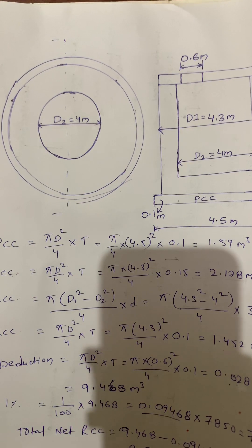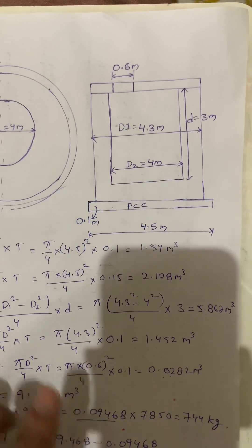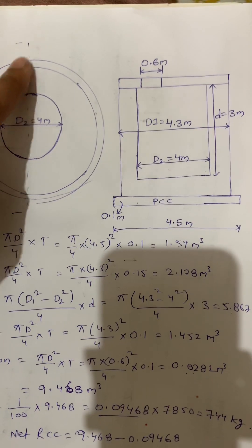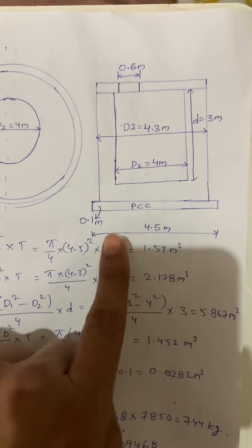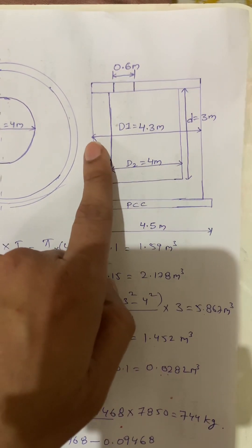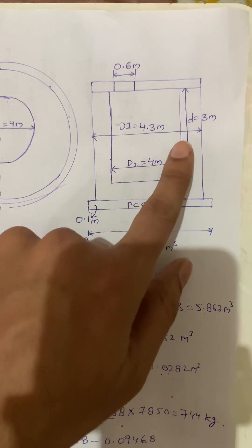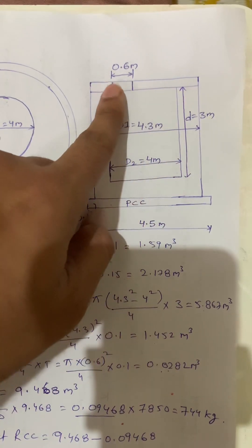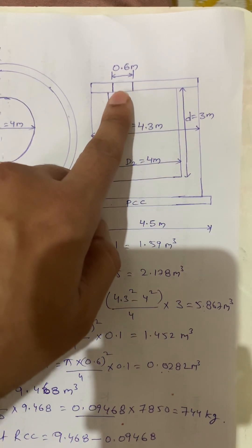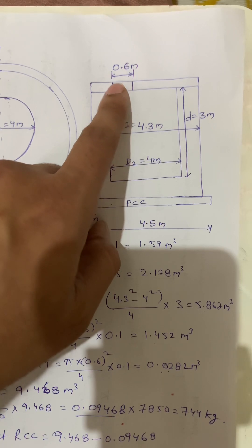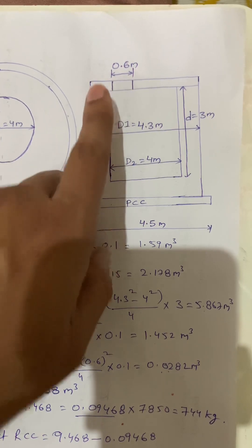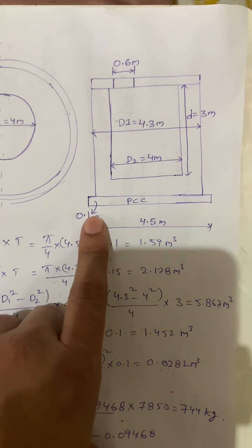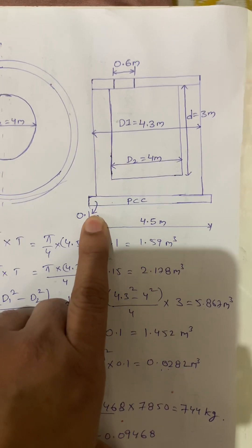I am cutting this as a section. Considering from here to here as one section, it looks like this. The outer diameter is 4.3 meters, inner diameter is 4 meters, depth of the tank is 3 meters, and there is a small inlet hole of 0.6 meters. The diameter of the PCC is 4.5 meters and thickness of the PCC is 0.1 meter.